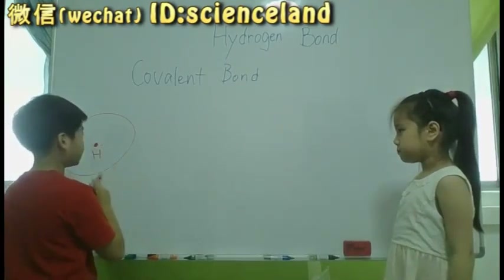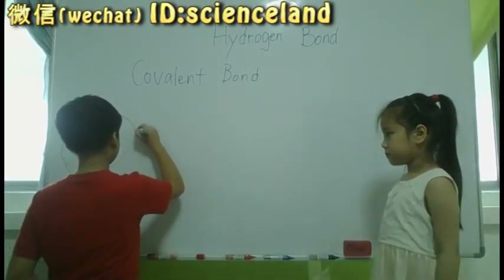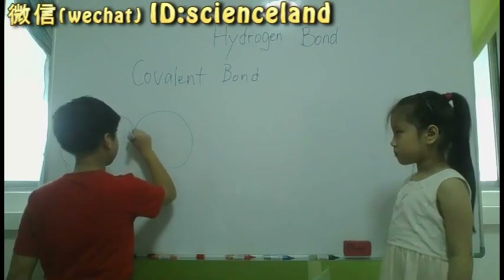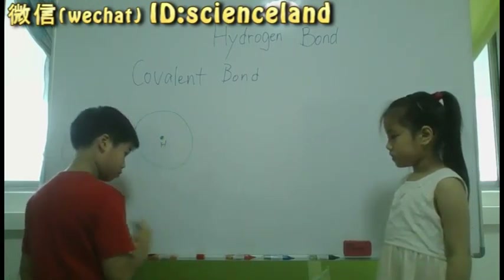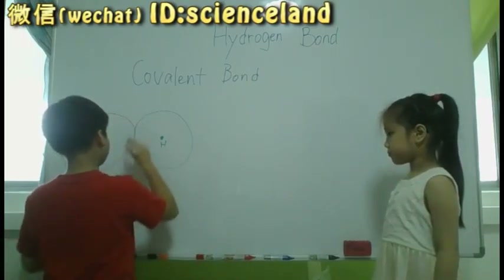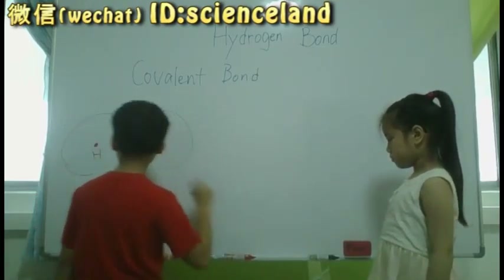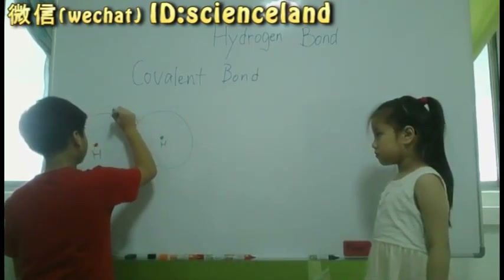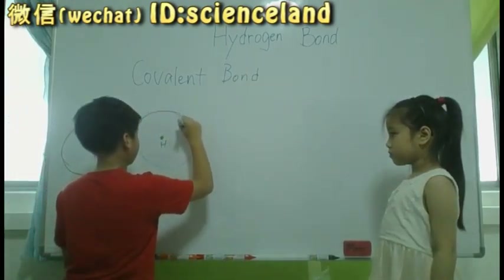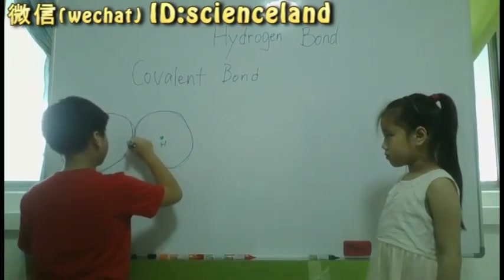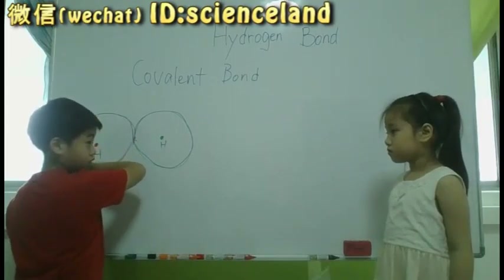This is a hydrogen. This is another hydrogen. These are the two hydrogens. The two hydrogens move around — both hydrogens.